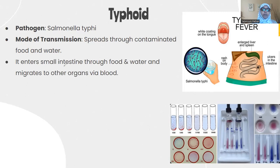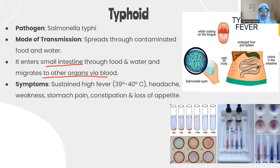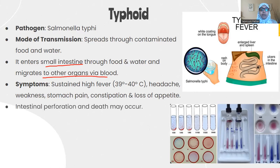The bacteria enter the small intestine through contaminated food and water, then after multiplication reach other parts of the body via the bloodstream. Symptoms include high fever of 39 to 40 degrees Celsius, headache, weakness, stomach pain, constipation, and loss of appetite. A white coat appears on the tongue, along with coughing and abdominal pain. If untreated, symptoms may include suffocation, breathlessness, and irregular heartbeat.